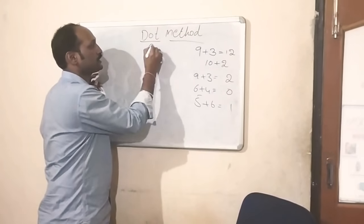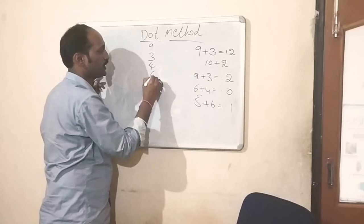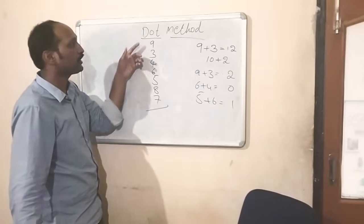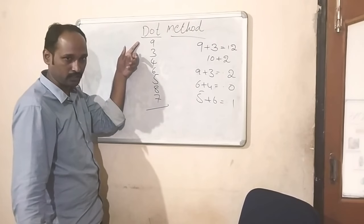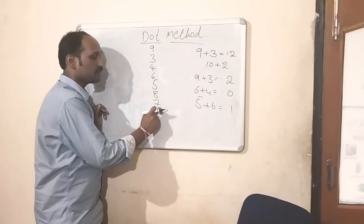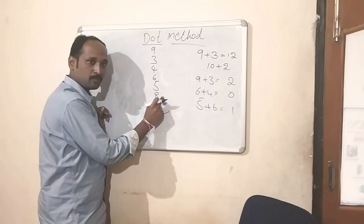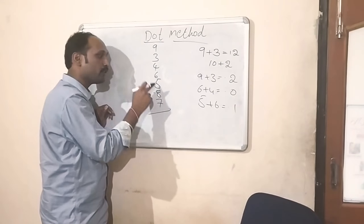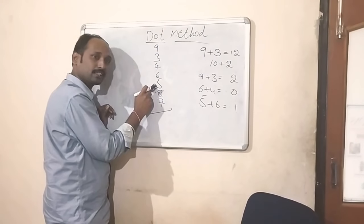See, we will do the question. Single digits: 9, 3, 4, 6, 5, 8, 7. This is your question. We need to add this by dot method. 7 plus 8 is 15. For 15, we keep a dot here and 5 we keep in brain. That 5 we are adding to the next number. 5 plus 5 is 10.